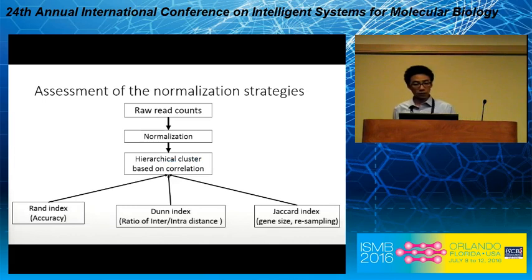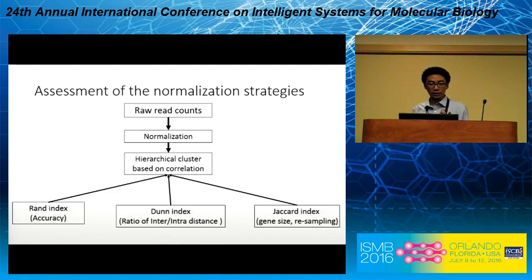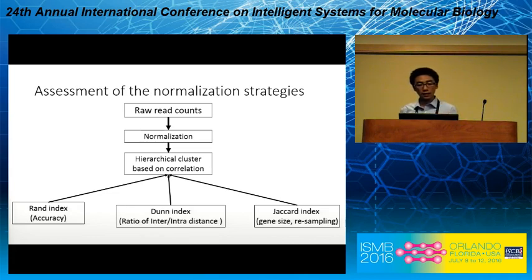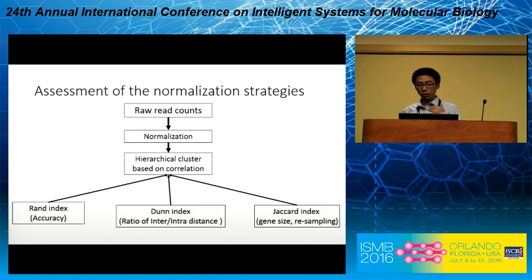We then try to assess the normalization strategies in this way. First, we took the raw counts and applied different normalization methods. Then we performed hierarchical clustering on the samples and used three different statistical indices to evaluate the clusters. The first is the Rand index — how many pairs of samples are in the same cluster compared with the original. The second is the Dunn index — the ratio of inter-cluster distance to intra-cluster distance. The last is the Jaccard index — we resampled by gene size or small samples and compared with the original clusters to see how many clusters were recovered.